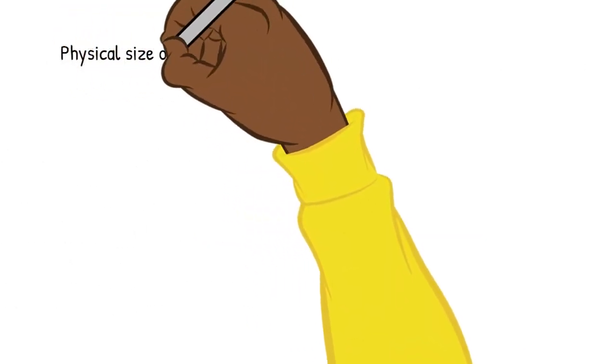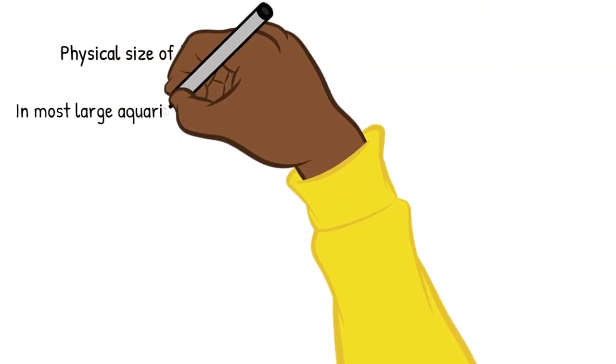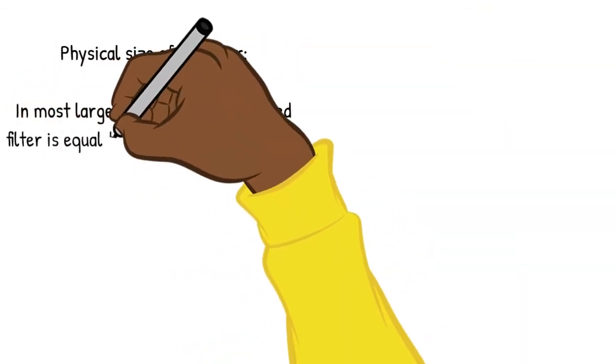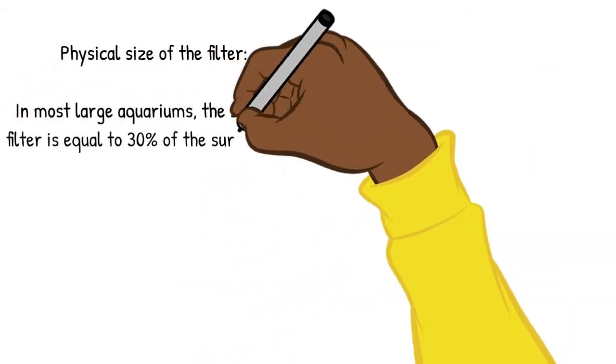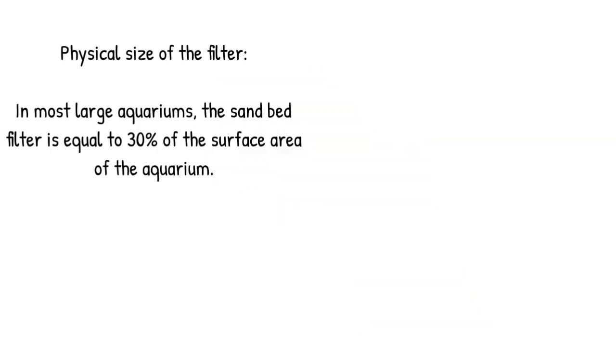Regarding the physical size of the filter: in most large aquariums, the sand bead filter is equal to 30% of the surface area of the aquarium.